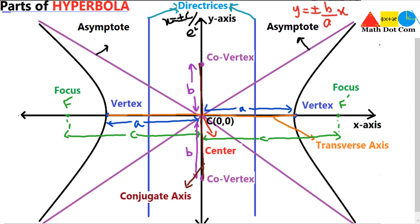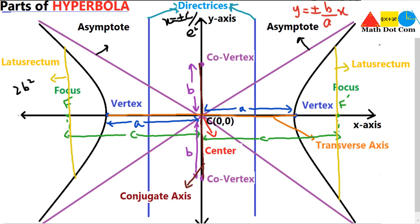The last part is the latus rectum of the hyperbola. There are two latus recta since there are two foci. The latus rectum is a line segment that is perpendicular to the transverse axis, passes through a focus, and whose endpoints lie on the hyperbola. It is parallel to the directrix. The length of the latus rectum is equal to 2b²/a, and by using this equation you can easily find the length of the latus rectum.